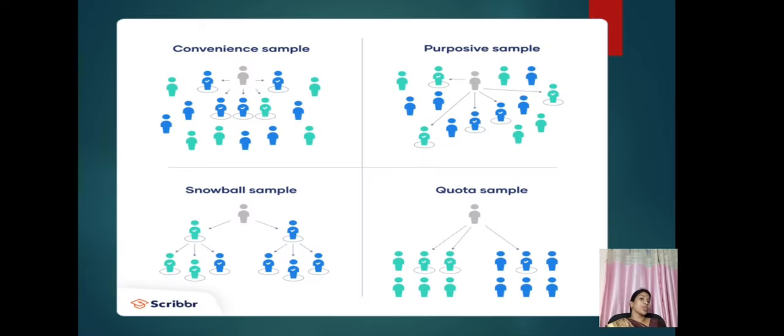You can see it in the picture. Non-probability sampling can be classified into convenience sampling, purposeful sampling, snowball sampling, and quota sampling. Thank you for watching this video.